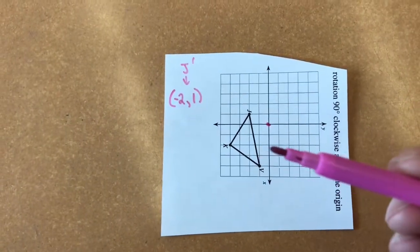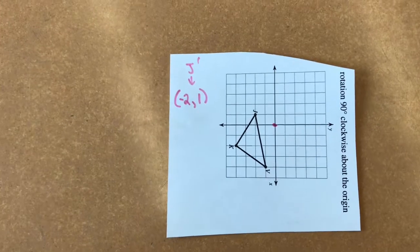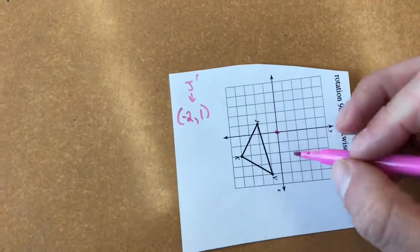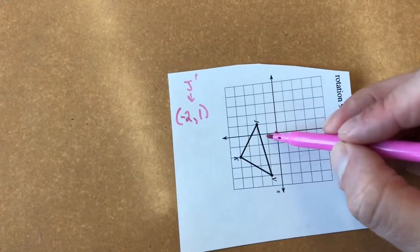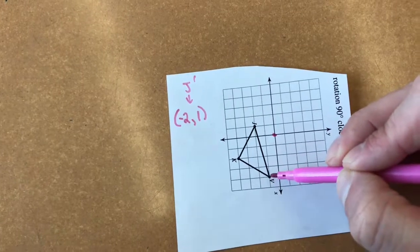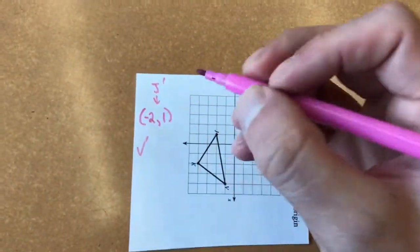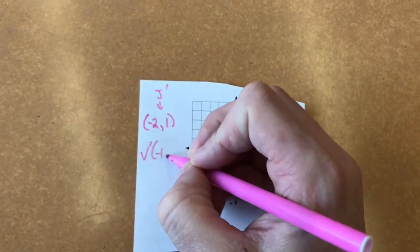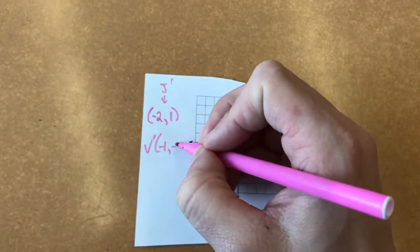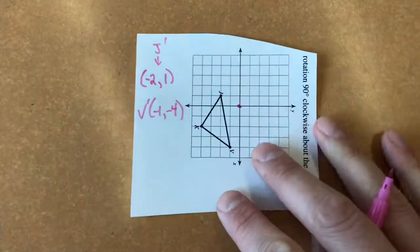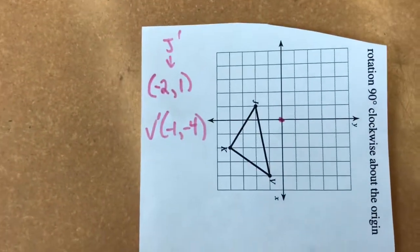How about V? V appears to be left one down one, two, three, four. So V prime would be left one, negative one, down four, negative four. All right? That's V prime.